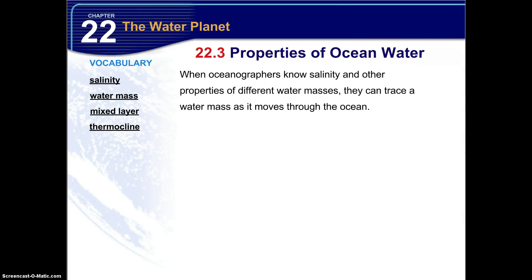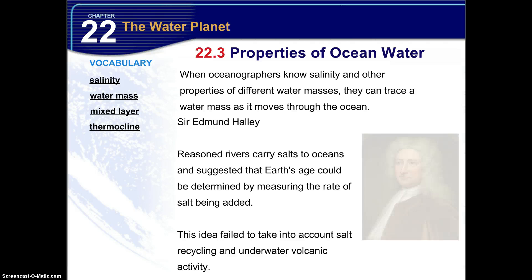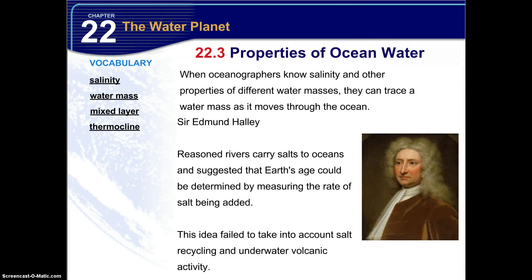When oceanographers know salinity and other properties of different water masses, they can trace a water mass as it moves through the ocean. Sir Edmund Halley came up with an idea of how the oceans became salty — he reasoned that rivers carry salts to the oceans from land, and suggested that Earth's age could be determined by measuring the rate of salt being added. This idea failed to account for salt recycled through underwater volcanic activity, but was widely used at the time. He was one of the very first to record observable data related to tracing Earth's actual age using ocean salinity.